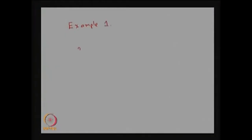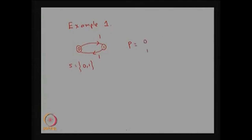The first example is the simplest one. In this example we have only two states; the state space contains only two elements: 0 and 1. The one-step transition probability from state 0 to state 1 is 1, and from state 1 to state 0 is also 1. The one-step transition probability matrix and the state transition diagram are one and the same. So P(0→0) = 0, P(0→1) = 1, P(1→0) = 1, P(1→1) = 0.